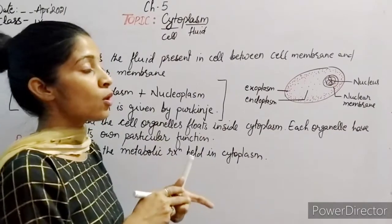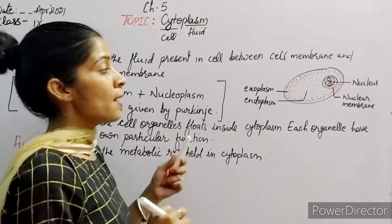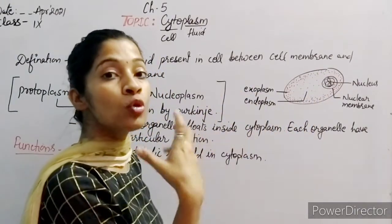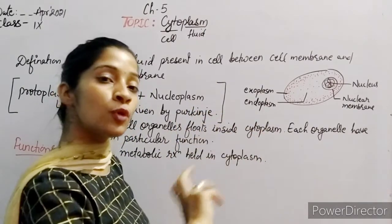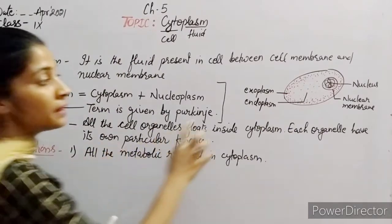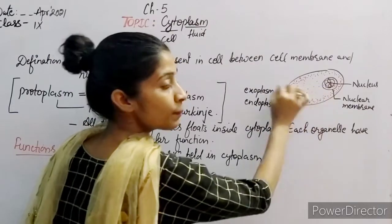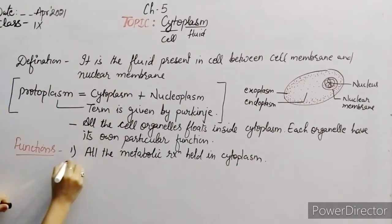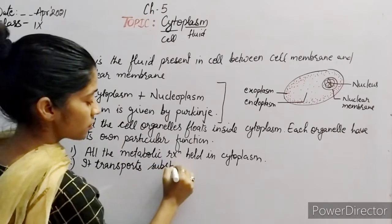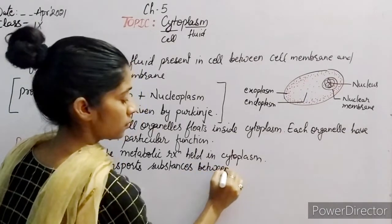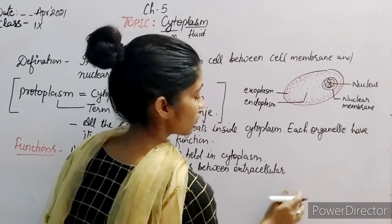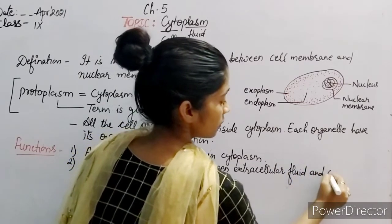Along with this, cytoplasm also helps in the transport of substances between the extracellular fluid and cell organelles. Any raw material from the outside environment is transported through the cytoplasm to reach the organelles.